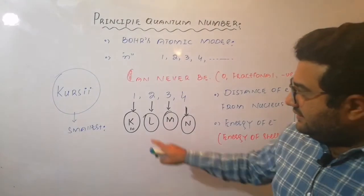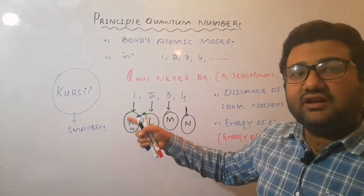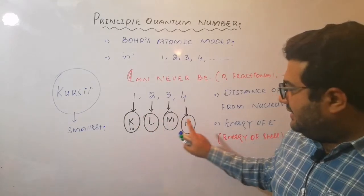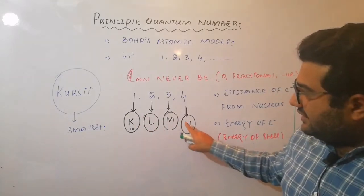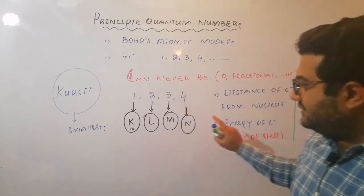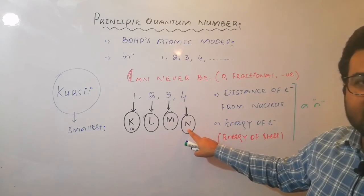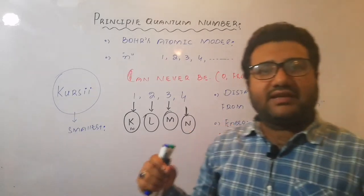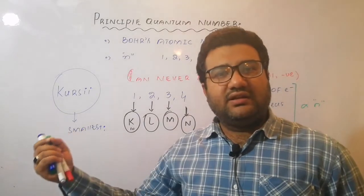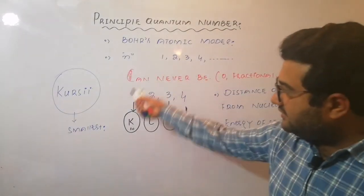So you can say that the electron in K shell is nearest to the nucleus with the lowest energy. And the electron in the N shell, among these values - I'm just talking among these values - the electron which is in the N shell has maximum distance from the nucleus and also has the maximum energy among these shells.